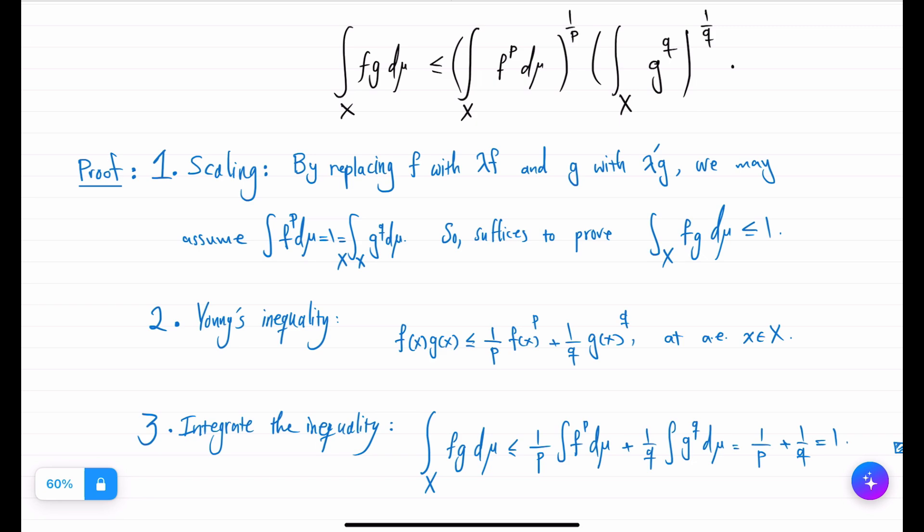And now that we know this holds almost everywhere, we integrate it and the magical part where the initial scaling assumption comes in. You get 1 over p plus 1 over q and the magical choice of the p and q to be conjugates makes it equal to 1, end of the proof.